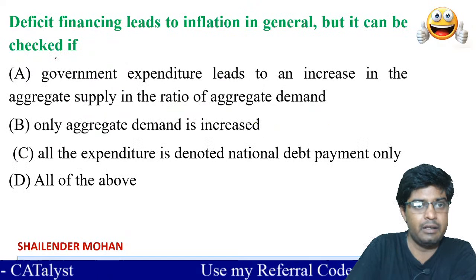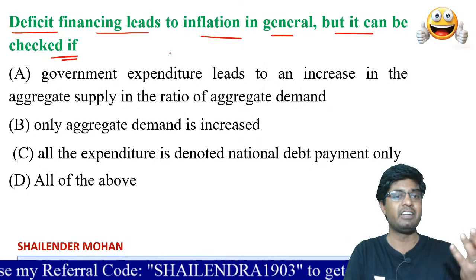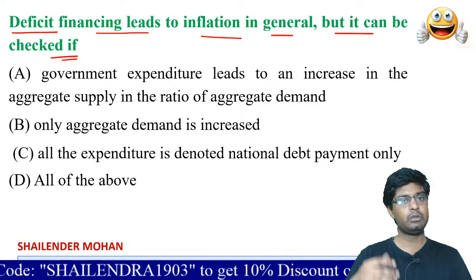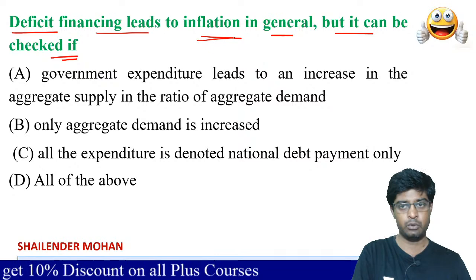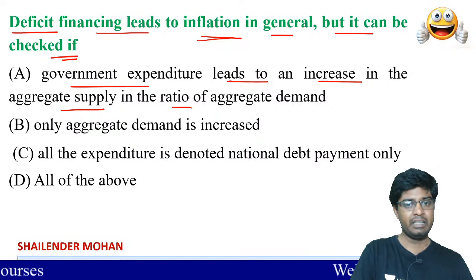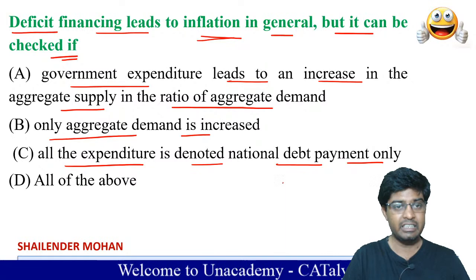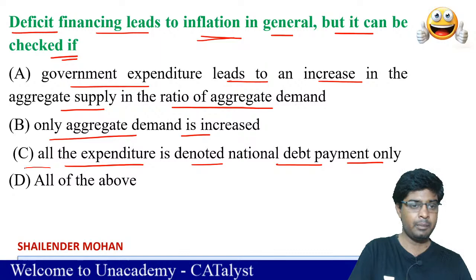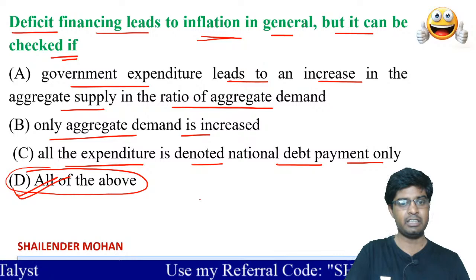Next question: deficit financing leads to inflation in general, but it can be checked. Deficit financing means financing is reduced, so things become more expensive. To check inflation, you reduce money supply. But when you do deficit financing, inflation occurs. To complete or control this, government expenditure leads to an increase in aggregate supply, and the answer involves checking aggregate demand. All expenditure is denoted by national debt payment.